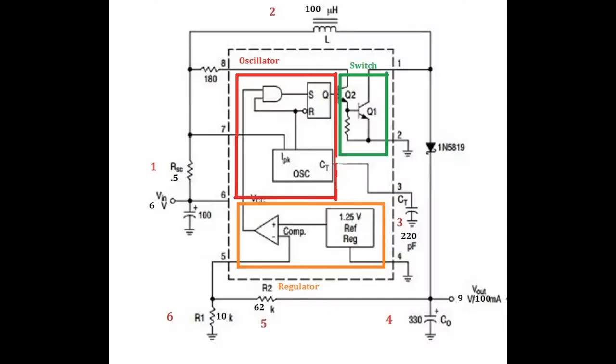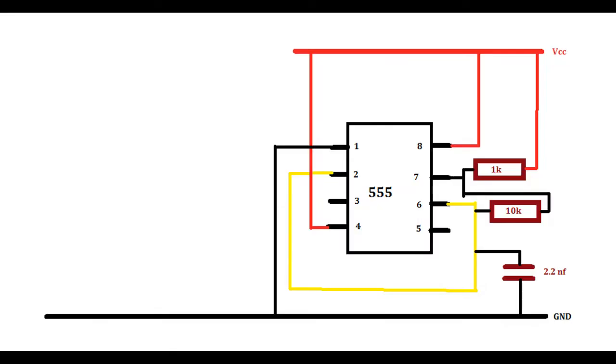So let's look at the 34063 and see what it actually is. If we take a look at it, we see that the majority of it is an oscillator. That oscillator is turning on and off a switch, which is the Darlington transistor there, to draw current through the inductor. And then the whole thing is regulated to maintain the voltage with the regulator circuit at the bottom that uses a 1.25 volt reference. So what can we do if we don't have a 34063? Well, almost everybody has a 555 timer IC in their collection.